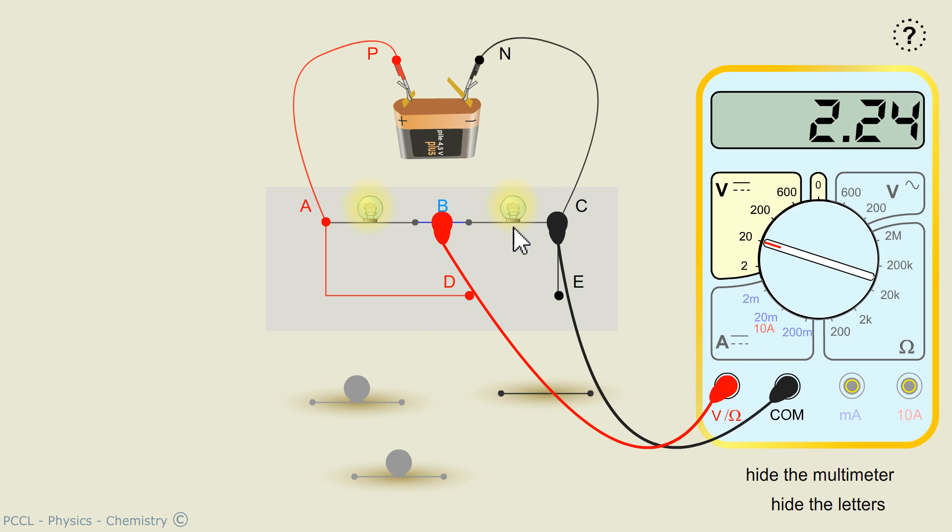VBC gives me 2.24 volts. It is possible that the two bulbs are identical. And VAC, across the assembly, 4.48 volts.